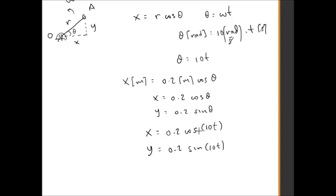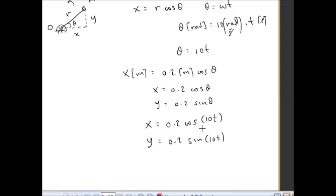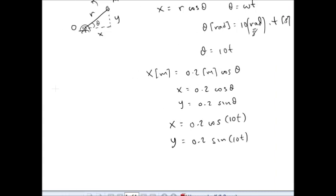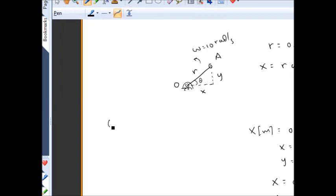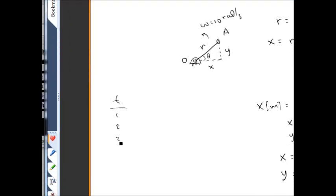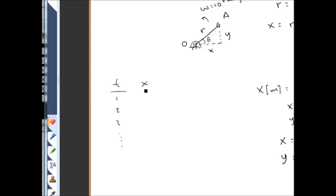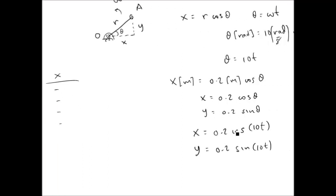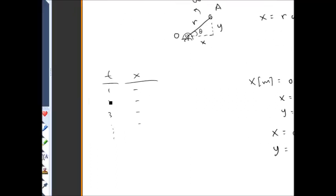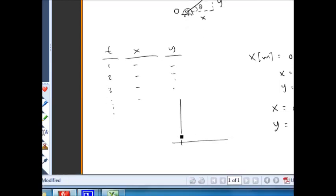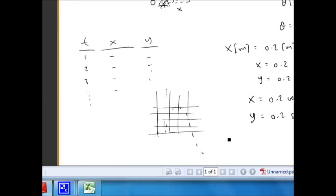X and Y are going to be cosinusoidal and sinusoidal respectively. If you wanted to plot x and y versus time, you could draw up a table with a bunch of time points — 1, 2, 3, etc. — and then get out your calculator and manually punch in 0.2 times the cosine of 10t when t is 1, 2, 3, and similarly for y. Then you could plot that on some graph paper, which would take a long time.